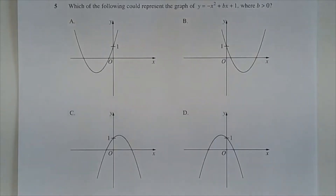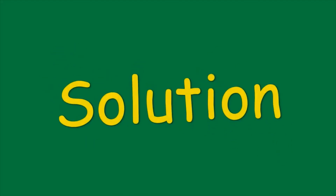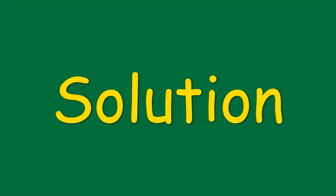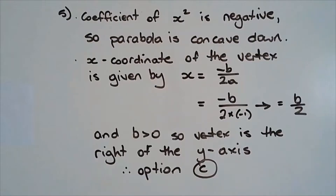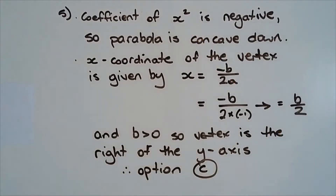Question 5. Which of the following could represent the graph of y equals negative x squared plus Bx plus 1, where B is greater than 0? The coefficient of the leading term x squared is negative, so the parabola is concave down. That means the answer is either option C or D.